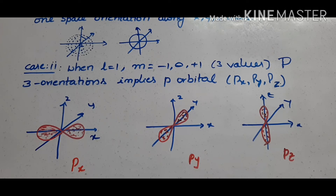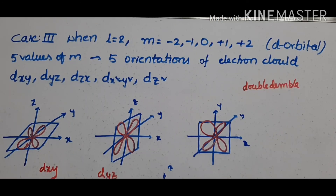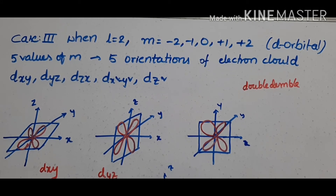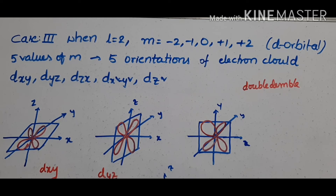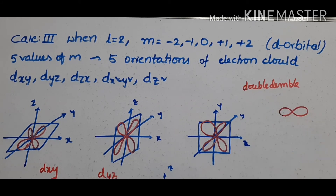Case 3: when L equals 2, M equals minus 2, minus 1, 0, plus 1, plus 2 — it has 5 values and 5 electron cloud orientations. This is the d orbital. The d orbital orientations are dxy, dyz, dzx, dx²y², and dz². The p orbital has two lobes in a dumbbell shape, but the d orbital has four lobes — a double dumbbell shape.